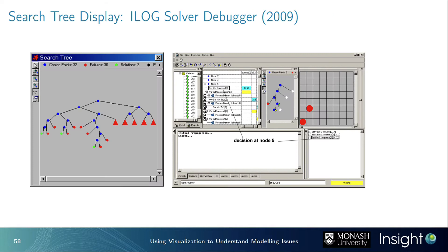The iLogSolver debugger had an integrated view with a model-specific visualization — for the N-queens problem you could see the chessboard layout, the search tree, and a textual view for individual decisions or propagation steps inside the solver, giving really deep insight. Another example is CPViz, which also has a tree display showing branching structure. Then there are pixel trees designed to visualize very large trees with millions of nodes.